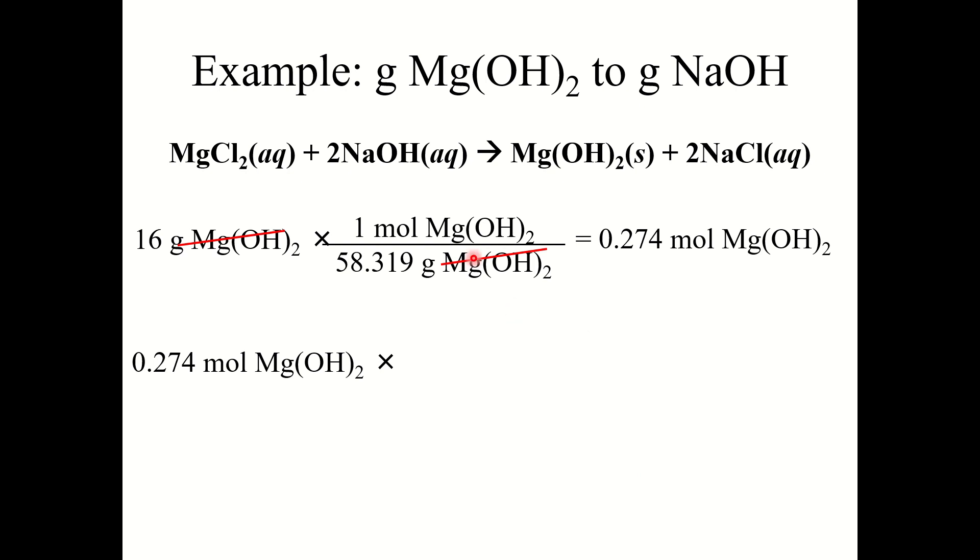Now I'm going to convert from moles magnesium hydroxide to moles sodium hydroxide using those coefficients from the balanced chemical equation. So I'm working with Mg(OH)2 and I'm trying to go to NaOH. So I've got one mole Mg(OH)2 on the bottom, two moles NaOH on top. So Mg(OH)2 cancels. This gives me 0.549 moles NaOH.